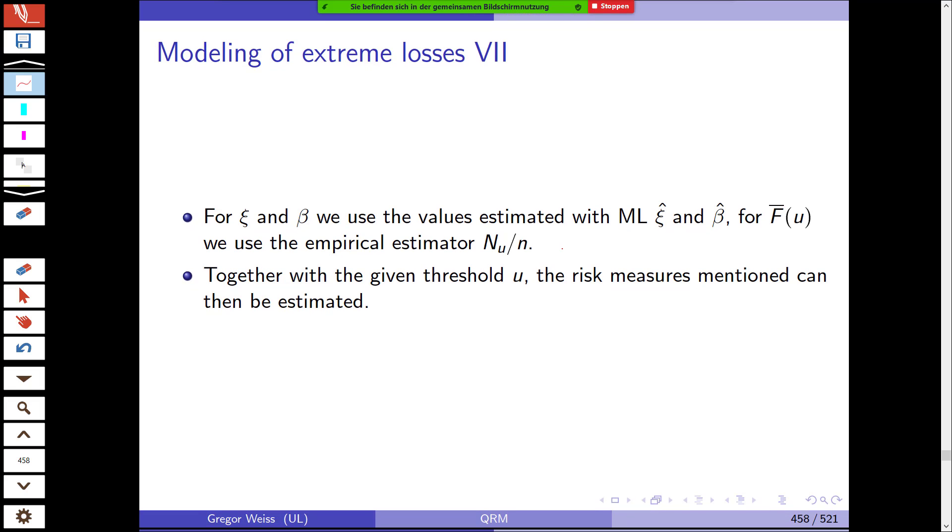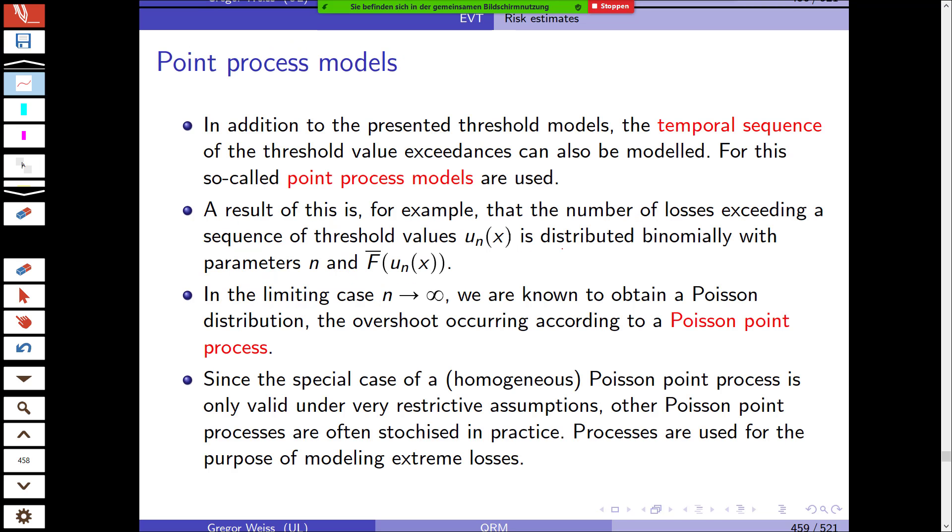For xi and beta, we use those values estimated with maximum likelihood. For the survival function, we can use the empirical estimator nu divided by n. Together with the given threshold, you can estimate those risk measures, value at risk and expected shortfall as before.